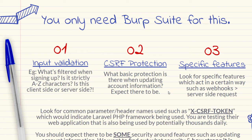Getting back to the cross-site request forgery bit — look for common parameter and header names. You might see in Burp the parameter X-CSRF-Token, which is actually used by the Laravel PHP framework. So start looking into how it's validated, are there any ways to bypass it, any ways developers make mistakes. You can start testing common things such as changing the request type, removing the token, and checking how often the token expires.